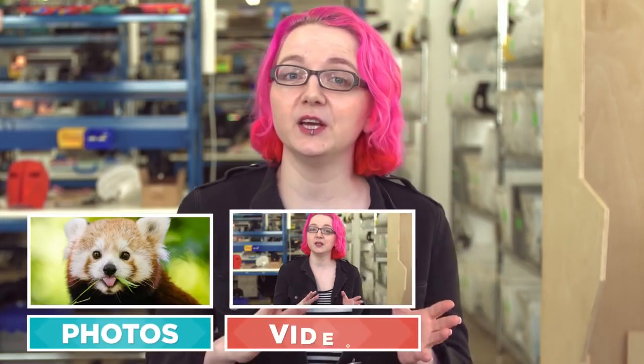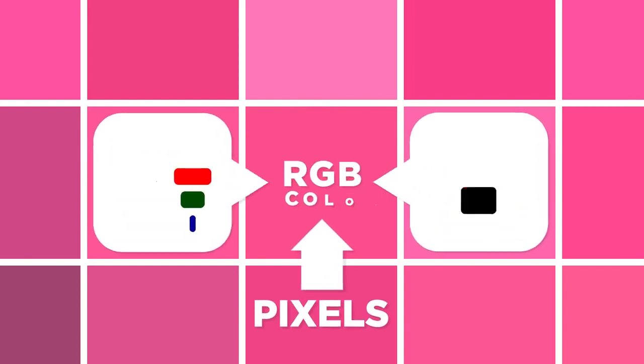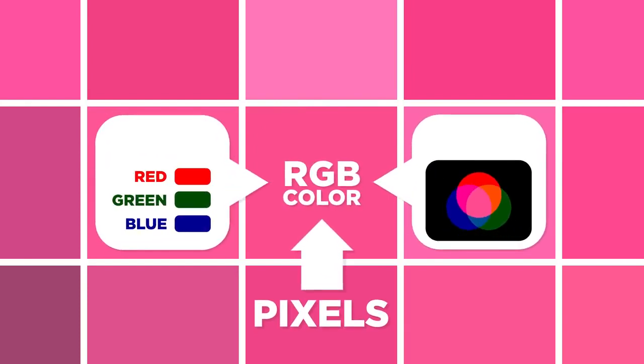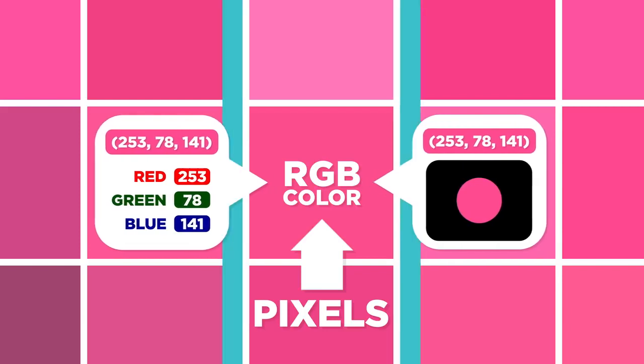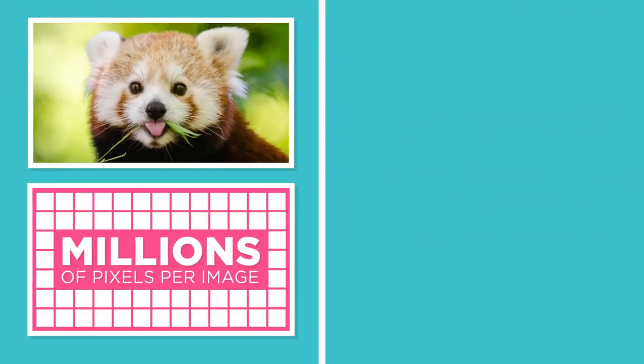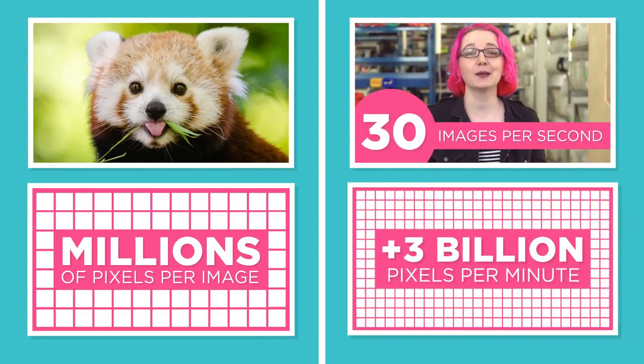Now let's consider photos, videos, and all the graphics you see on a screen. All of these images are made out of teeny dots called pixels, and each pixel has a color. Each of the colors can be represented with numbers. When you consider that a typical image has millions of these pixels, and a typical video shows 30 images per second, we're talking about a lot of data here.